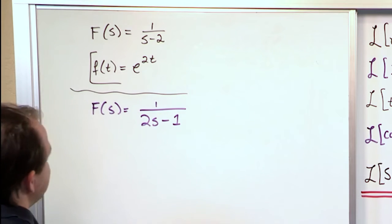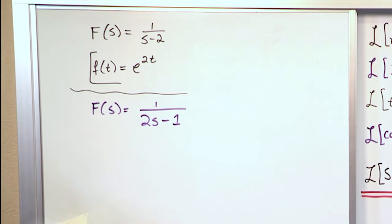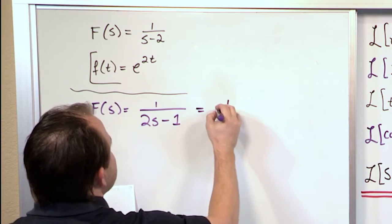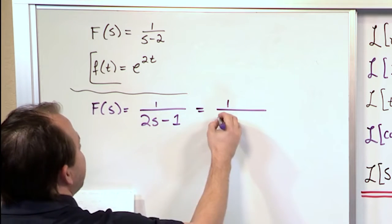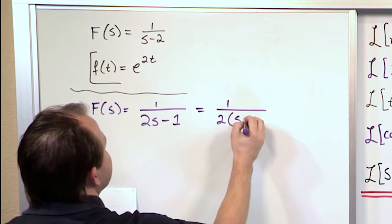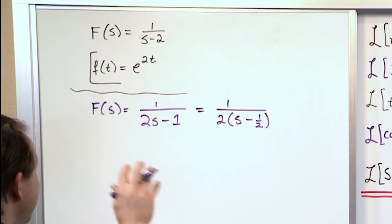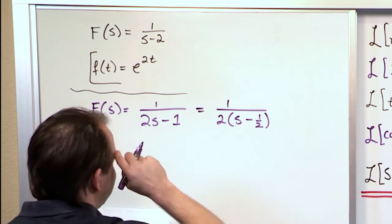So for instance this function of s if you think about it you can pull the 2 out in the bottom and then it would be over here s minus 1 half. We just factored out the 2 right. And again this doesn't quite look like anything that we have over there either.